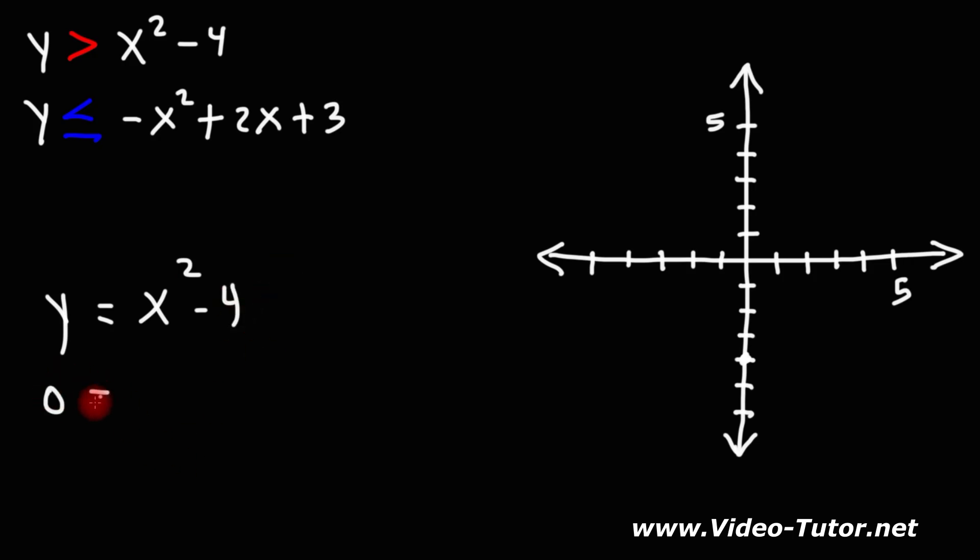If we set y equal to 0 and solve for x, what we have here is a difference of perfect squares. So to factor it's going to be x plus 2, x minus 2.